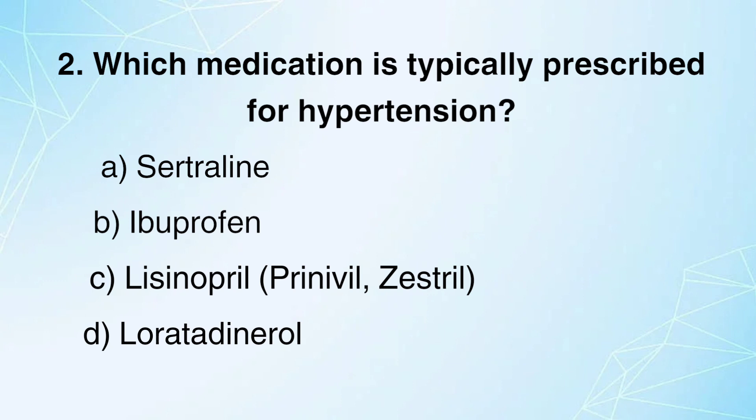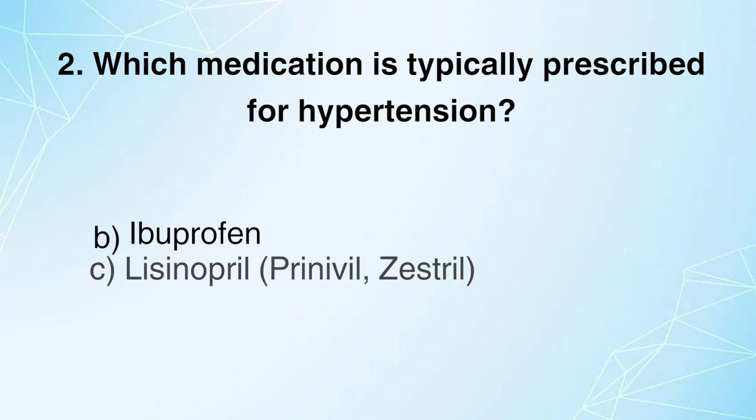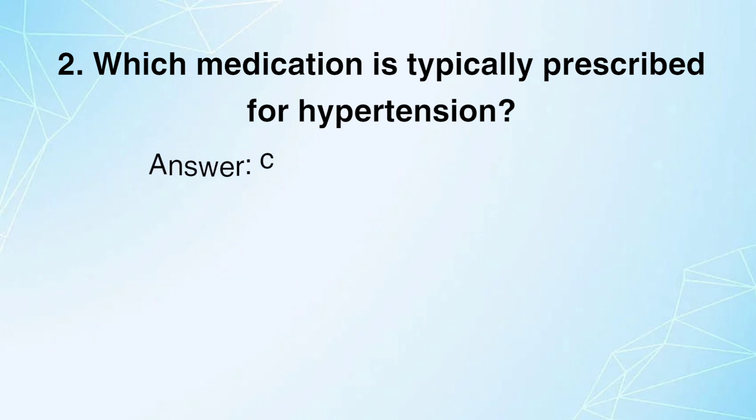Which medication is typically prescribed for hypertension? A. Sertraline. B. Ibuprofen. C. Lisinopril (Prinivil, Zestril). D. Loratadine. Answer: C.